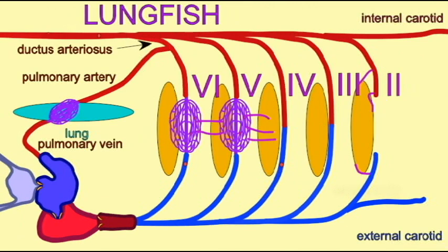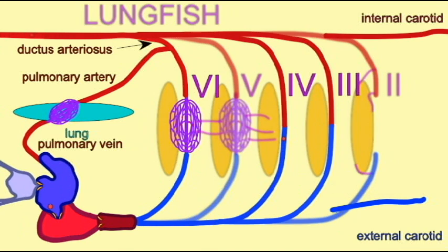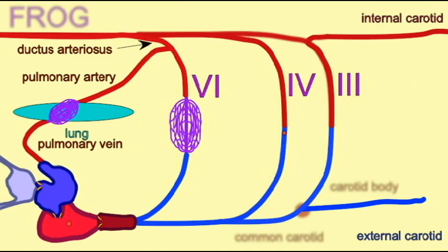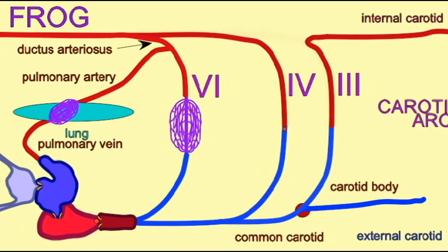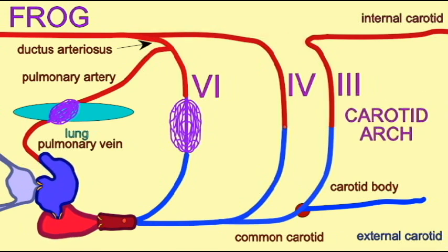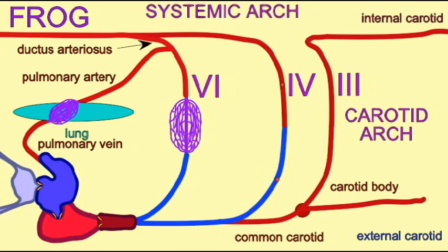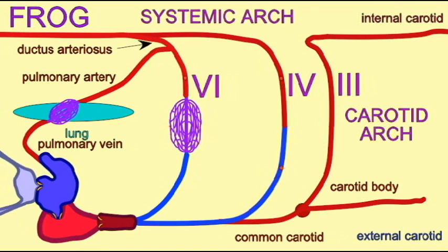However, during embryonic development, these aortic arches are then modified so that only three are maintained in adult life. The third aortic arch forms the carotid arch and services the brain.